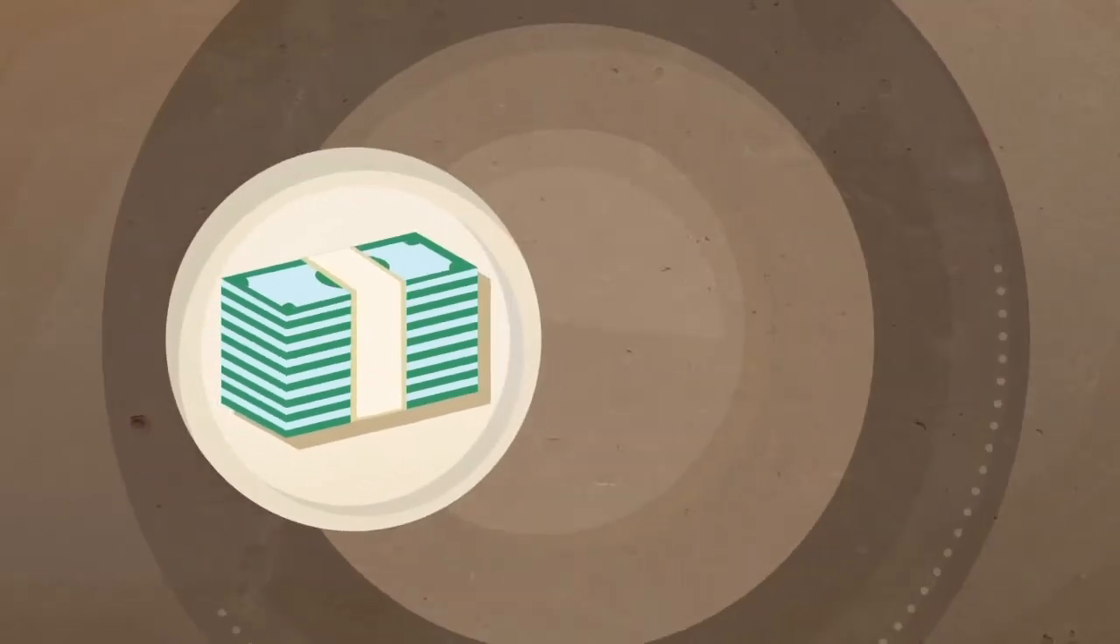The system dries the dewatered sludge and then uses pyrolysis technology to convert it into char and gas byproducts. To reach an economically and environmentally sound solution, this new system includes the following features.